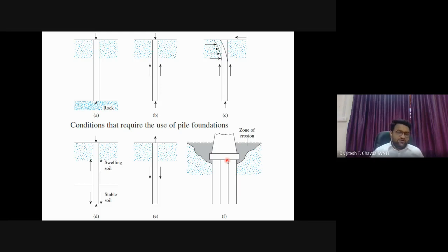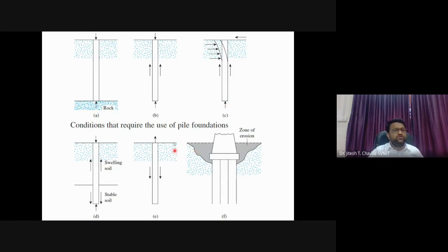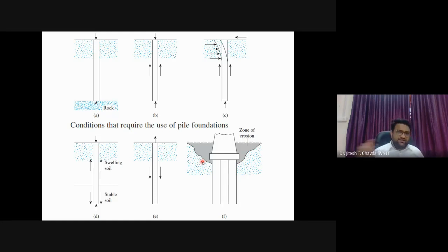Bridge abutments are also susceptible to scour and erosion - moving water can erode soil and expose the foundation. On the Virar to Vaitarna railway route, there are two bridges over Vaitarna Creek. The train moves very slowly over the first bridge because the abutment previously failed due to erosion and was retrofitted, reducing its capacity. A new bridge is currently under construction.